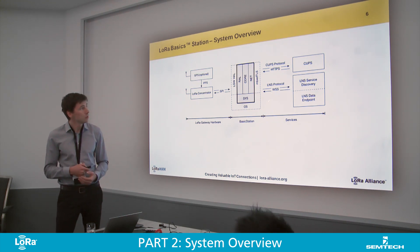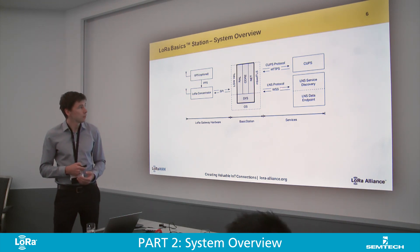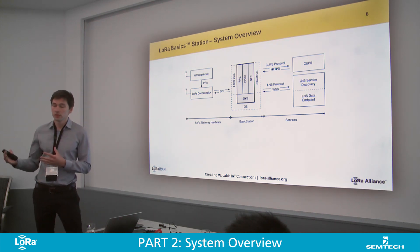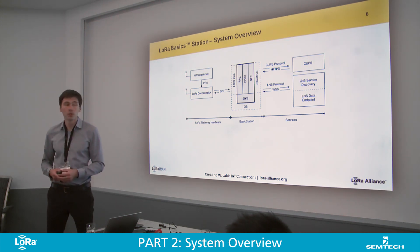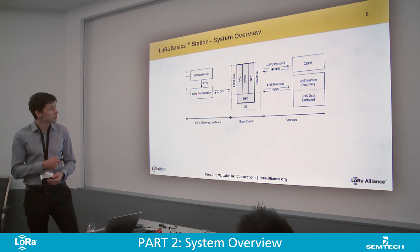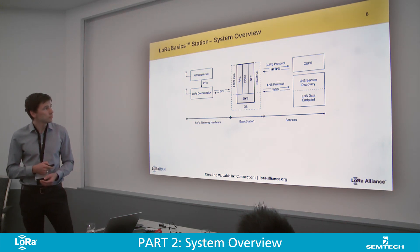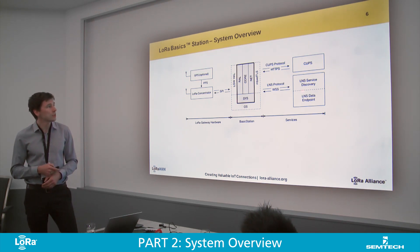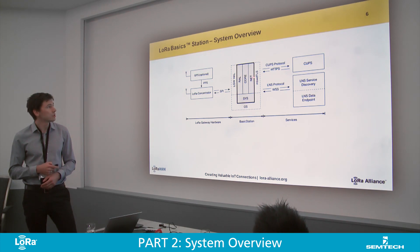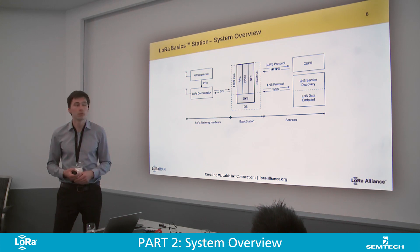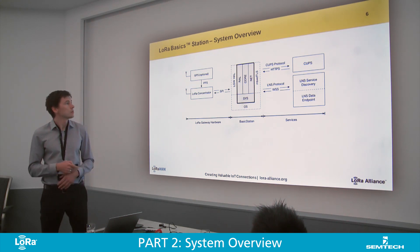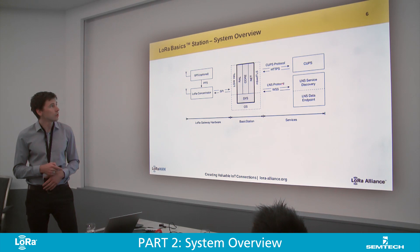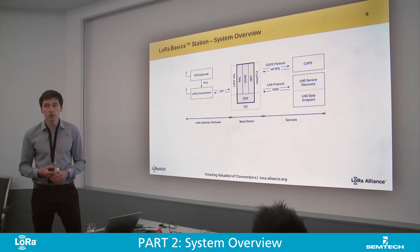On the other side, we have protocols that Basic Station uses to talk to the backend. Every packet received by the concentrator is forwarded to the network server, and downlink requests that the network server wants to schedule on air are processed in Basic Station and then put on air over the concentrator. This is one aspect of the protocol, and the other one is the CUPS protocol.